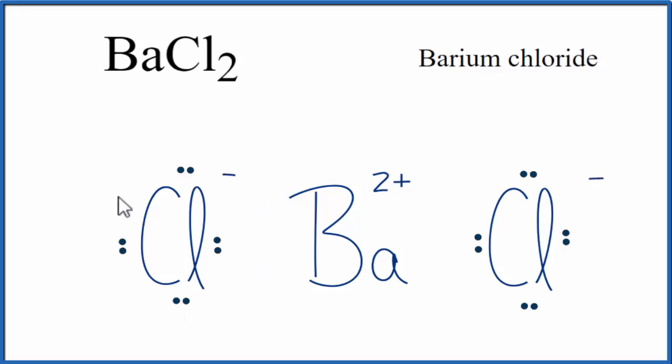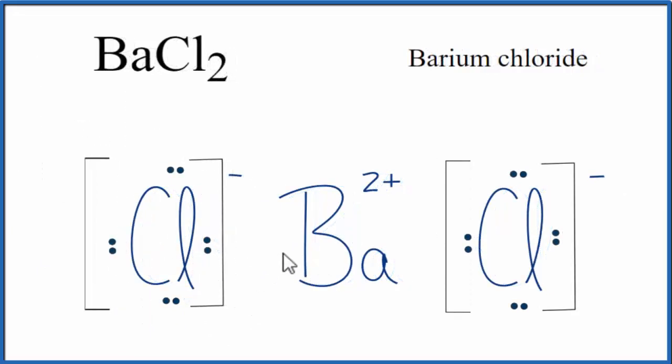We should put brackets around each of these chloride ions here. And we do that to show that these electrons, we had two electrons for barium, have been transferred. They're no longer with the barium, and they aren't shared between these two atoms like they would be in a covalent bond.